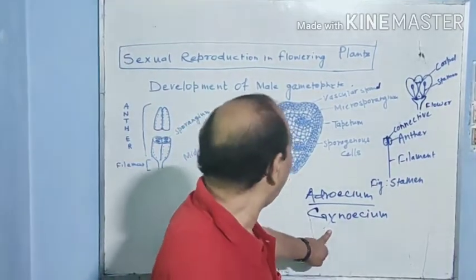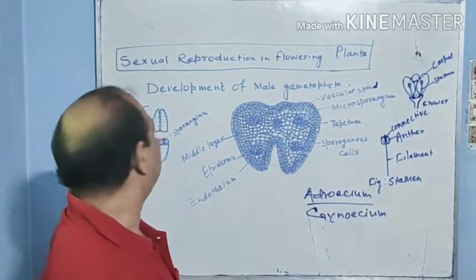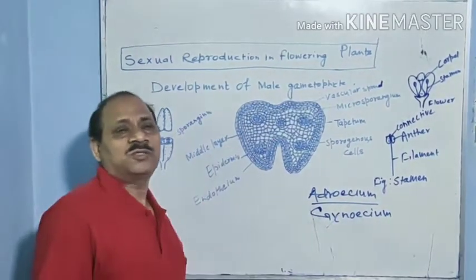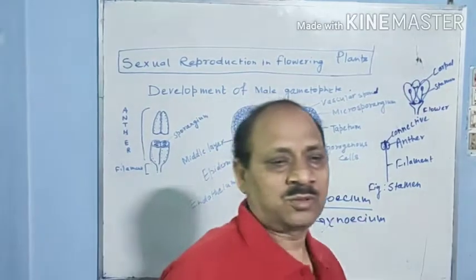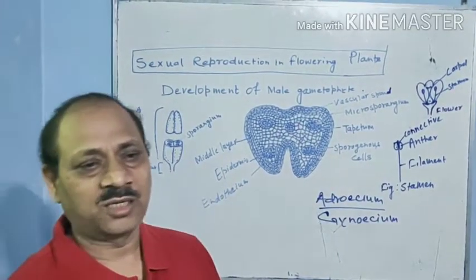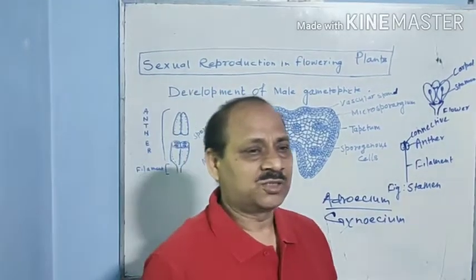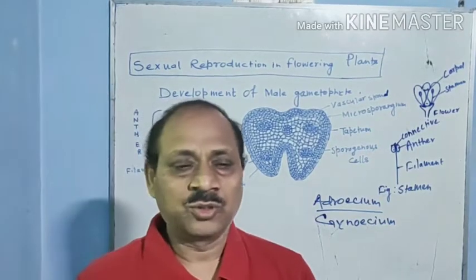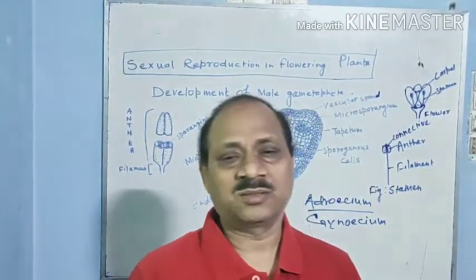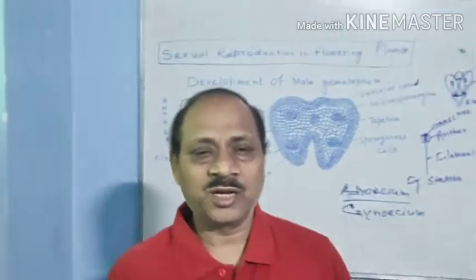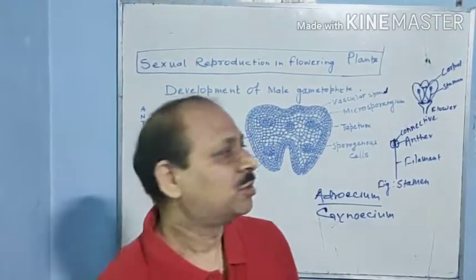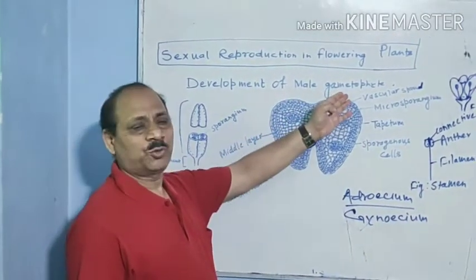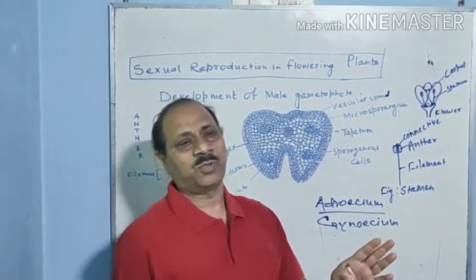Now I am going to discuss the development of male gametophyte, which means the formation of male gametes. Sexual reproduction is a type of reproduction which occurs by the formation and fusion of gametes. Here I shall discuss the development of male gametophyte — that is, the formation of male gametes.